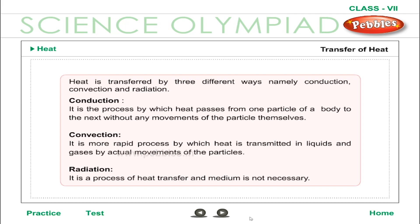Transfer of heat: heat is transferred by three different ways — conduction, convection, and radiation. Conduction is the process by which heat passes from one particle of a body to the next without any movement of the particles themselves. Convection is a more rapid process by which heat is transmitted in liquids and gases by actual movement of the particles. Radiation is a process of heat transfer in which a medium is not necessary.